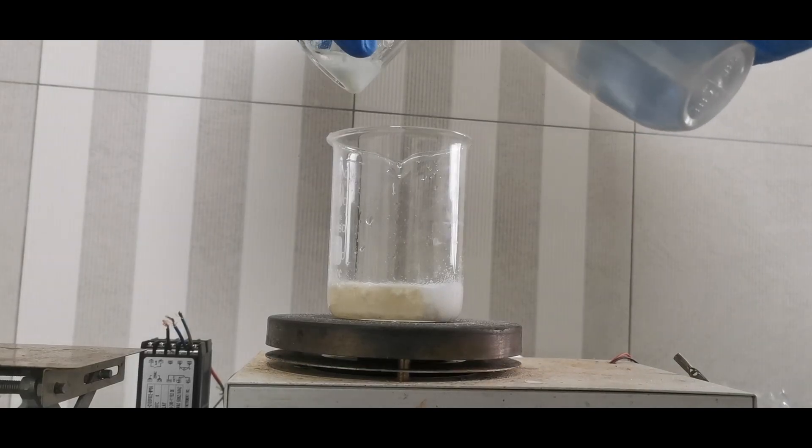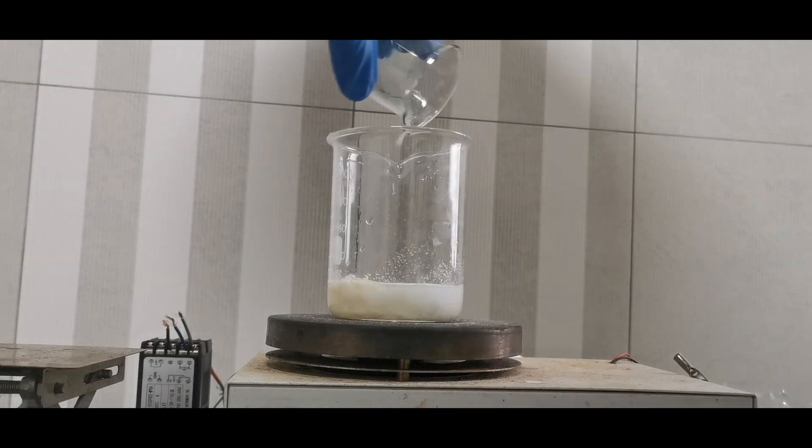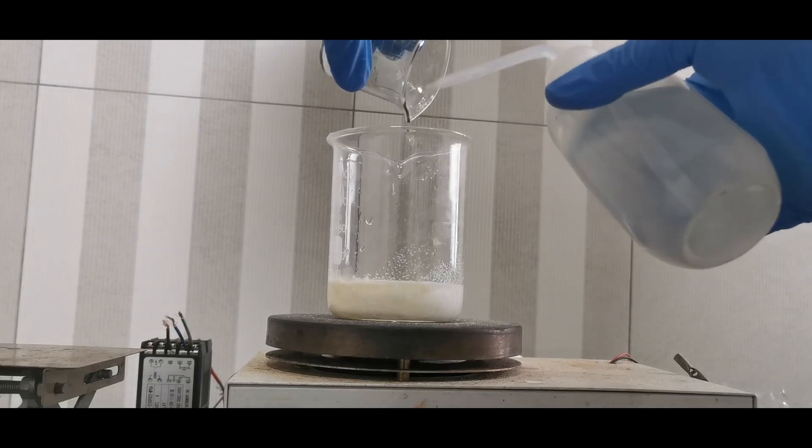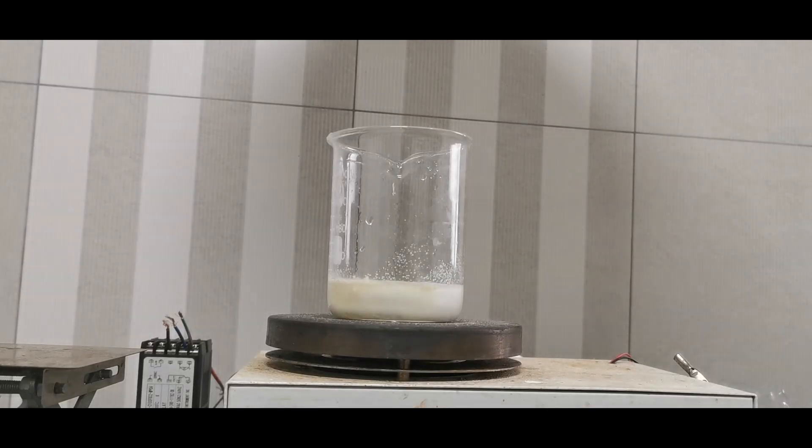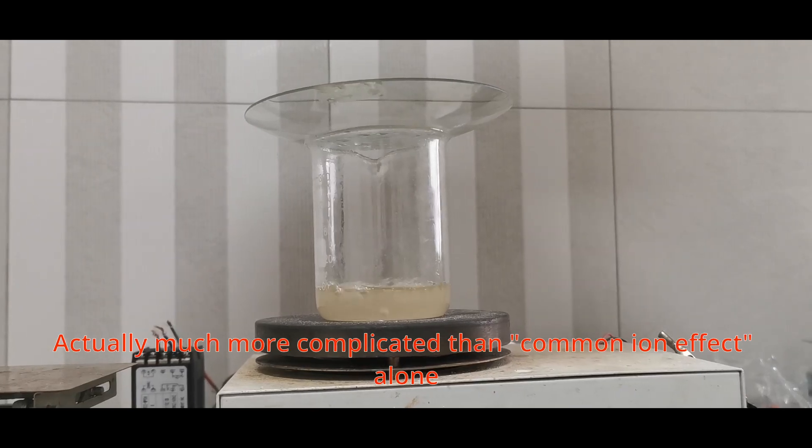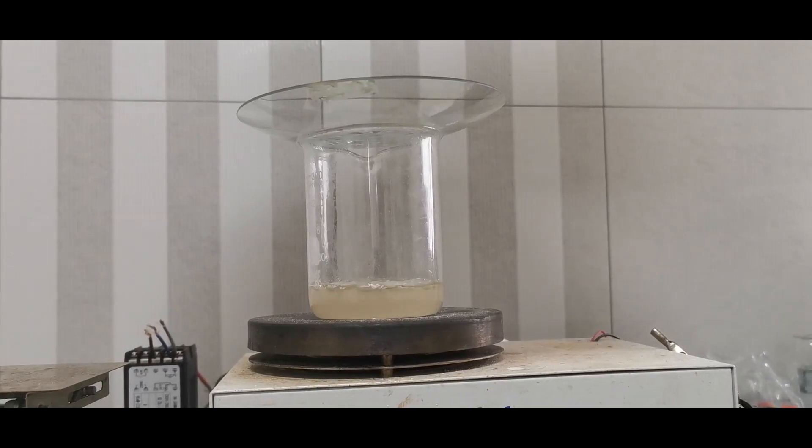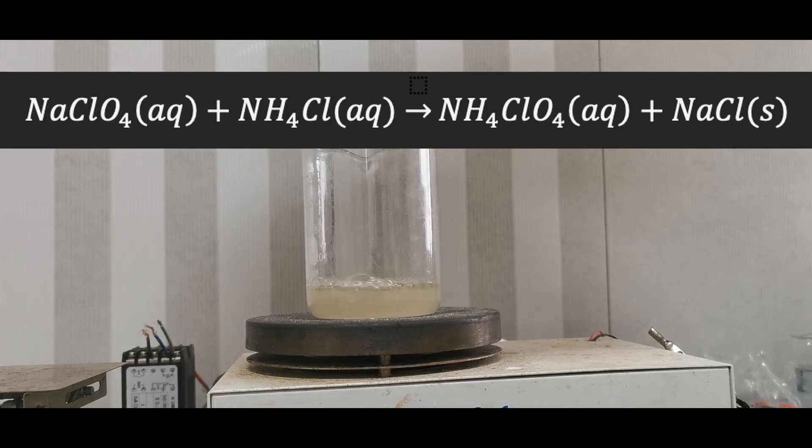I then add 15 grams of ammonium chloride, which represents a 60% molar excess, and boil the mixture. This excess is necessary to decrease the solubility of ammonium perchlorate, thanks to the common ion effect. When the mixture finally boils, some solids do remain, which is sodium chloride produced from a double replacement reaction.